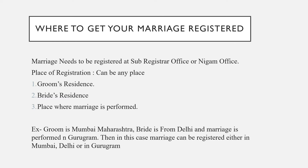Now we will talk about where to get your marriage registered. Marriages are registered in the municipal or Nigam office. The place can be either the groom's residence, the bride's residence, or the place where the marriage is performed. For example, if the groom is from Mumbai, the bride is from Delhi, and the marriage is performed in Gurugram in Haryana, then the marriage can be registered in Mumbai, Delhi, or Gurugram — whichever the parties choose.